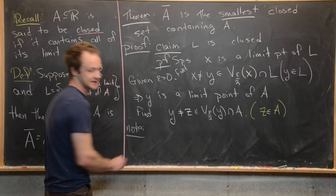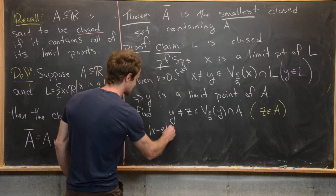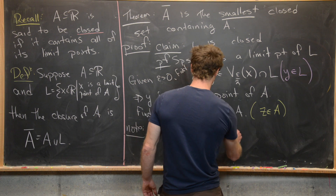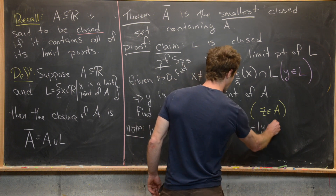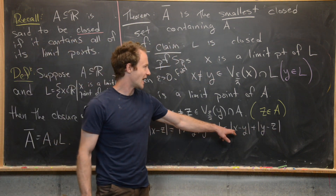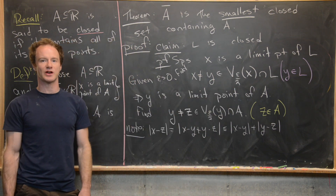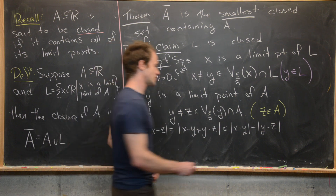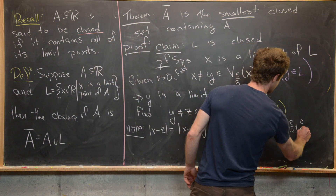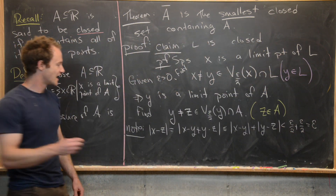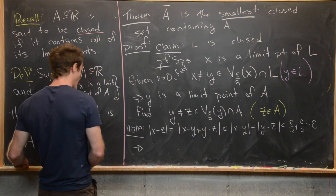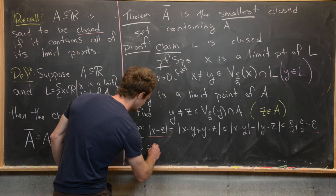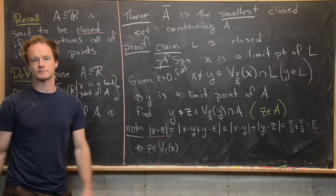Let's write that down via the triangle inequality. Notice that |X − Z| = |X − Y + Y − Z| ≤ |X − Y| + |Y − Z|. Now |X − Y| < ε/2 because of the epsilon-over-two neighborhood condition, and similarly |Y − Z| < ε/2, making the whole thing less than ε/2 + ε/2 = ε. This tells us that Z is an element of the epsilon neighborhood of X.